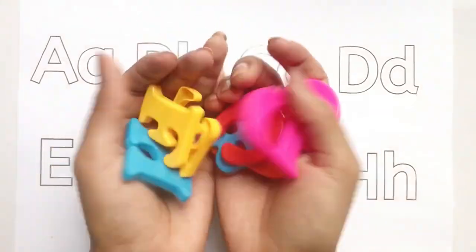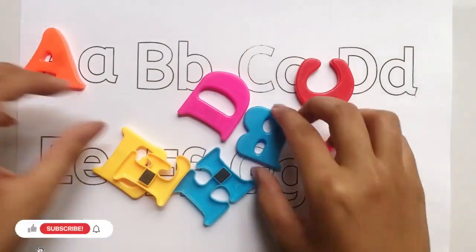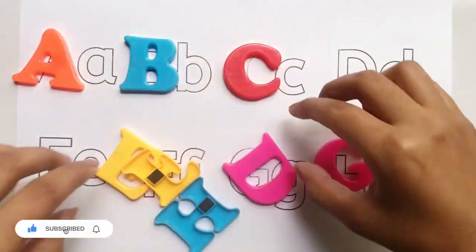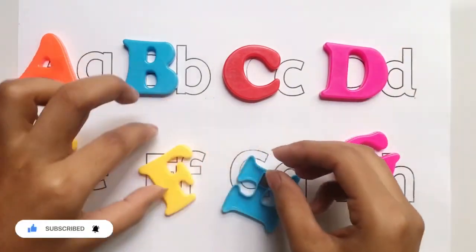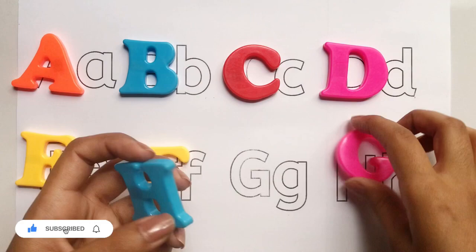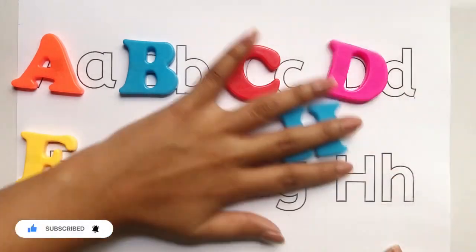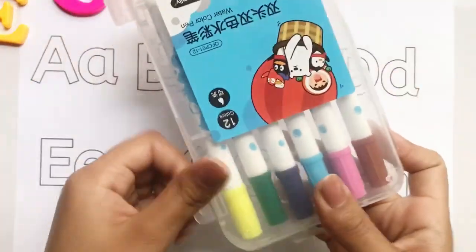Let's play with toys and learn alphabets. A, B, C, D, E, F, G, H. Now let's color the alphabets with marker colors.